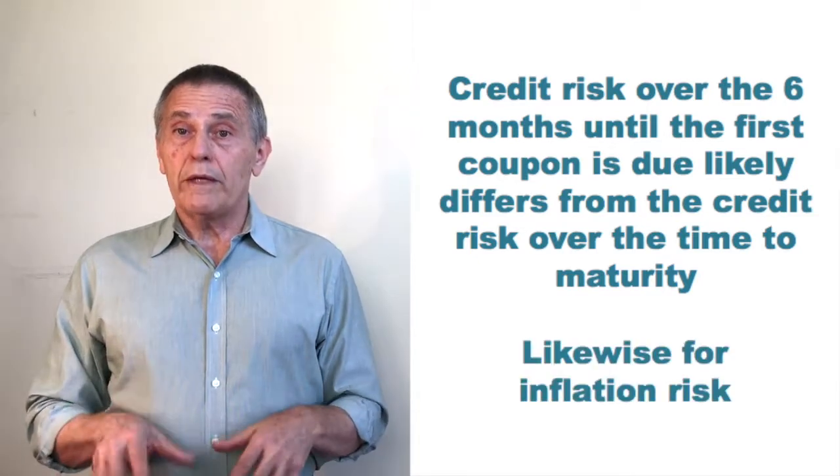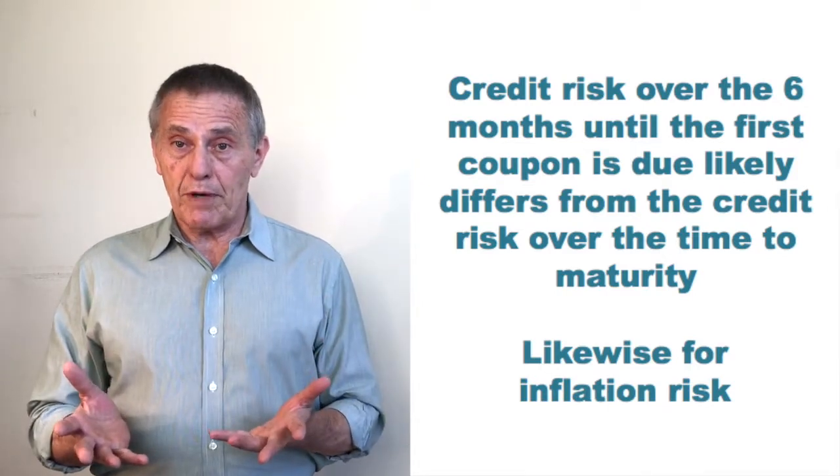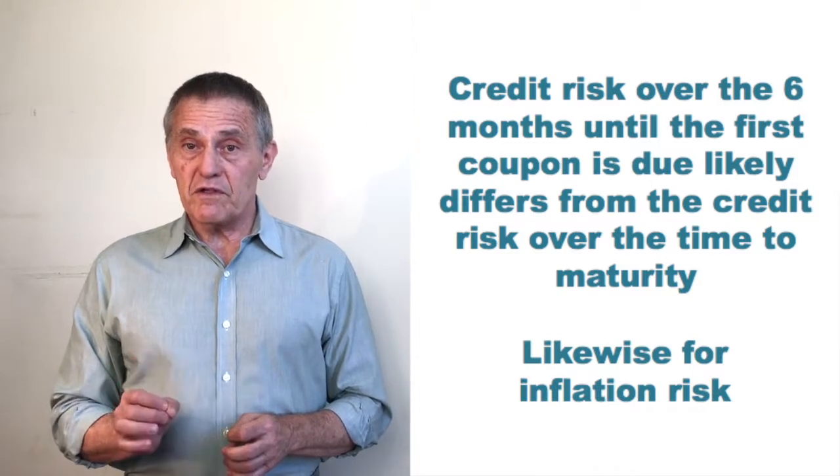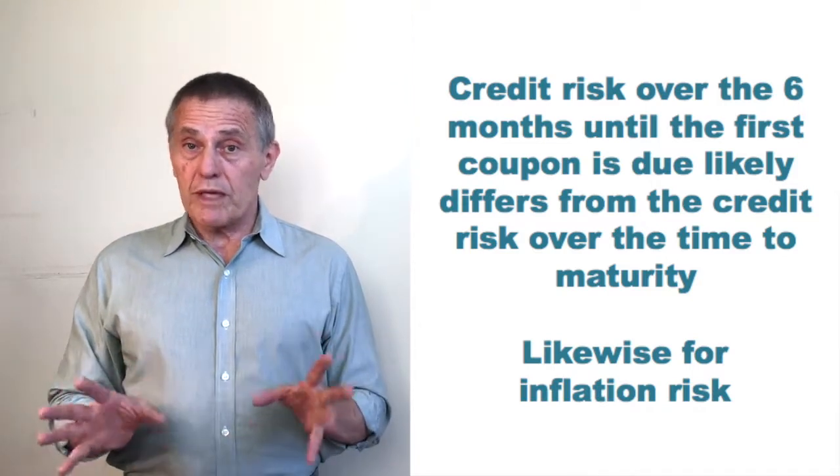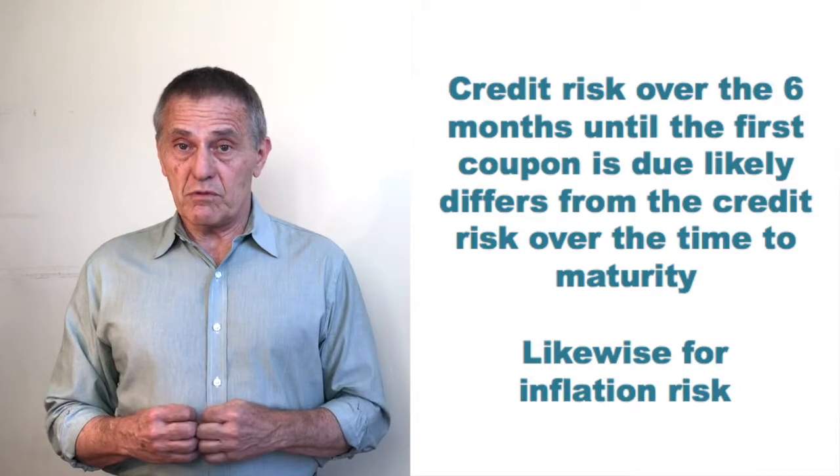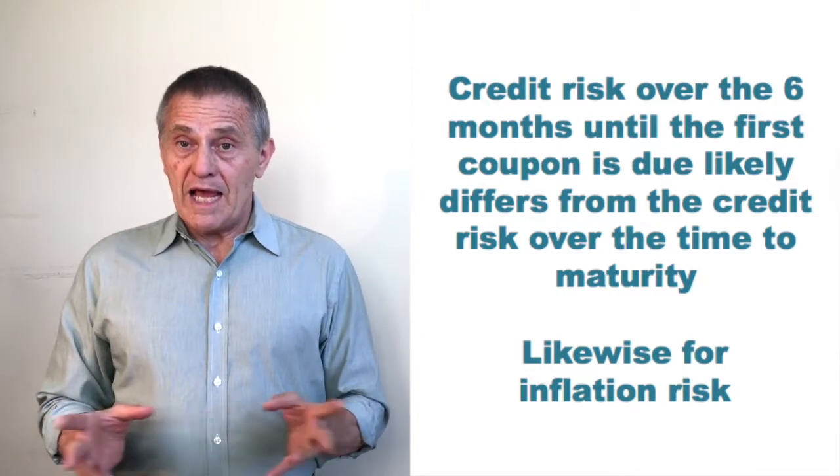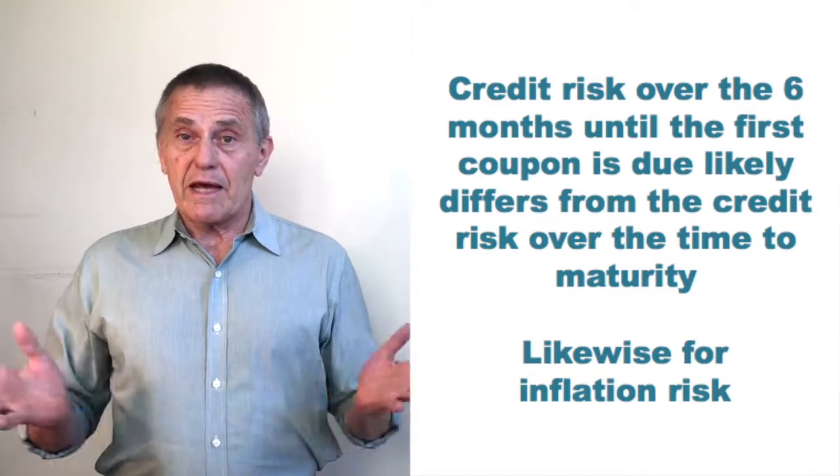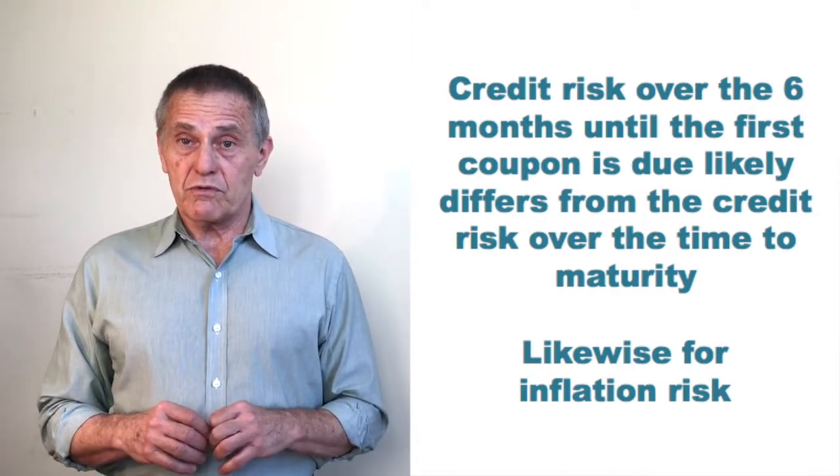That's why, in general, when we're going through the process of trying to estimate a bond's fair value, we want to discount each of the individual cash flows by an interest rate that reflects the risk of those individual cash flows. And that is likely to lead to a much better estimate of a bond's fair value than simply discounting all the cash flows by the same interest rate.